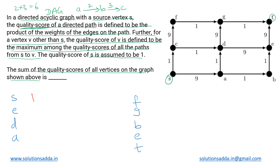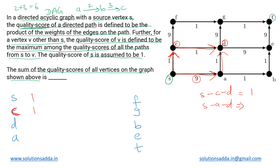Coming to vertex c, there is only one incoming path, which is from s to c. So its quality score is simply 1. Next, for vertex d, there are two paths from source: s → c → d and s → a → d. For the path s → c → d, the quality score is 1 × 1 = 1. For the path s → a → d, the quality score is 9 × 1 = 9.